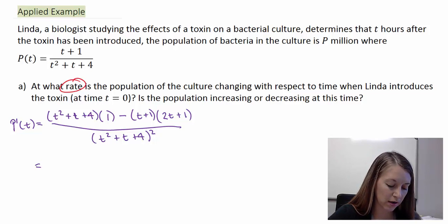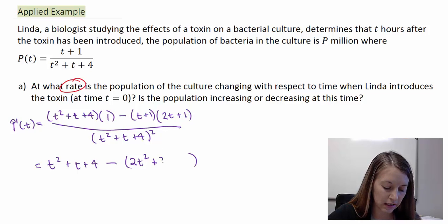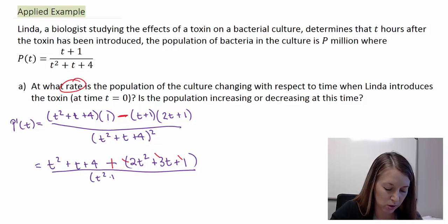So now I need to simplify this. In the first part here, if I just multiply it all by one, that gives the exact same thing that we have. Minus, in the back part here, we have to FOIL it. T times 2T gives me 2T squared. Outside of T and inside of 2T gives me 3T. And last gives me a plus 1.